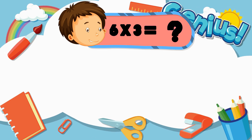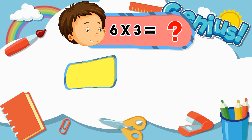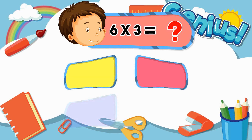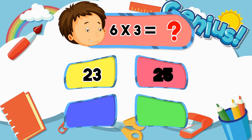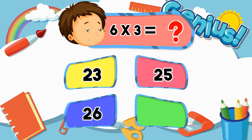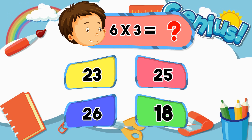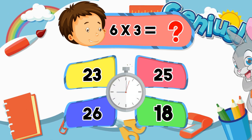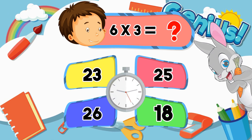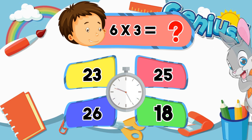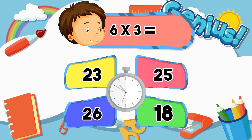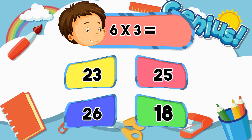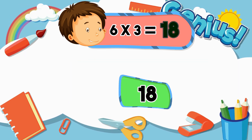What is 6 times 3? 23, 25, 18. The answer is 18.